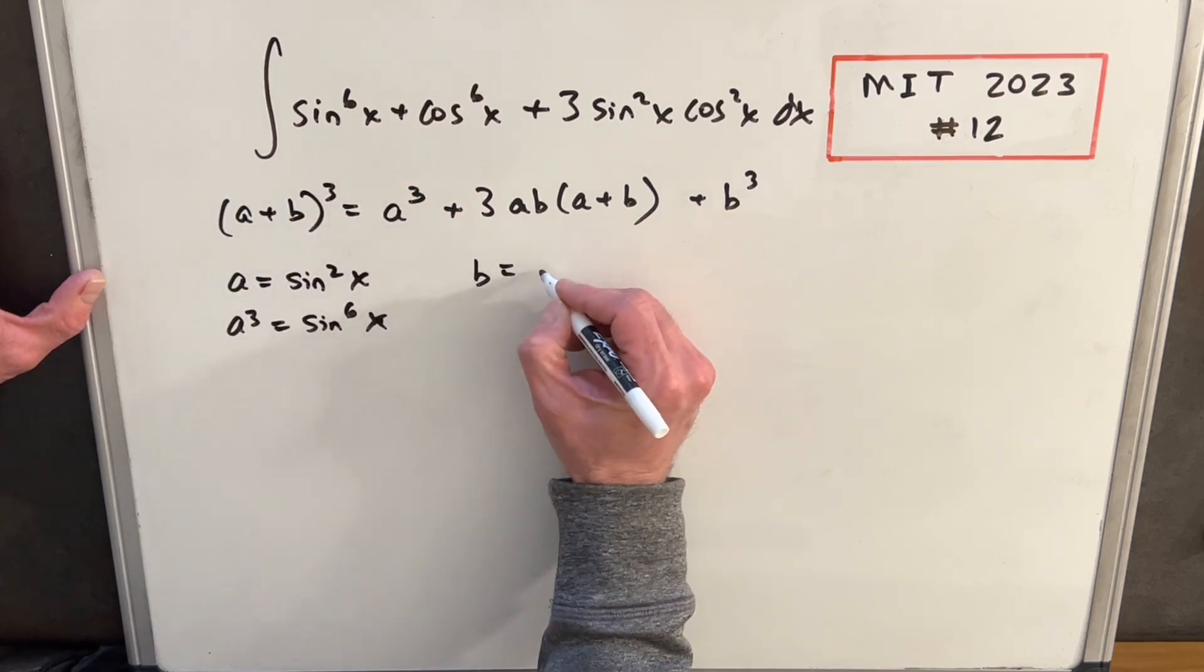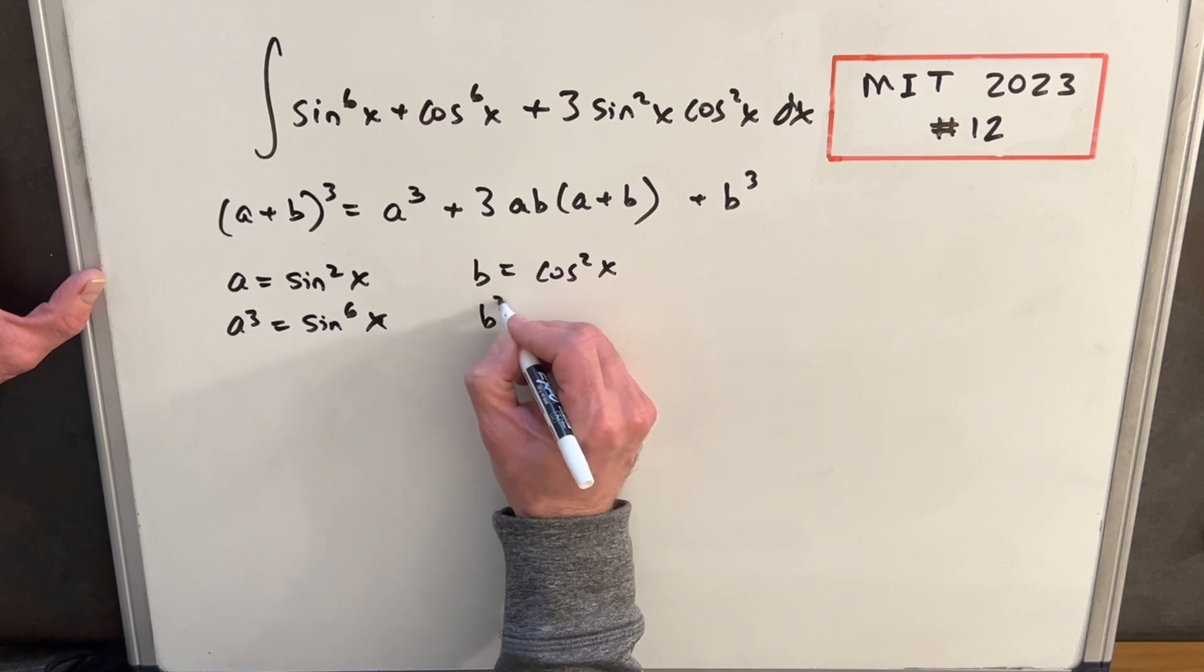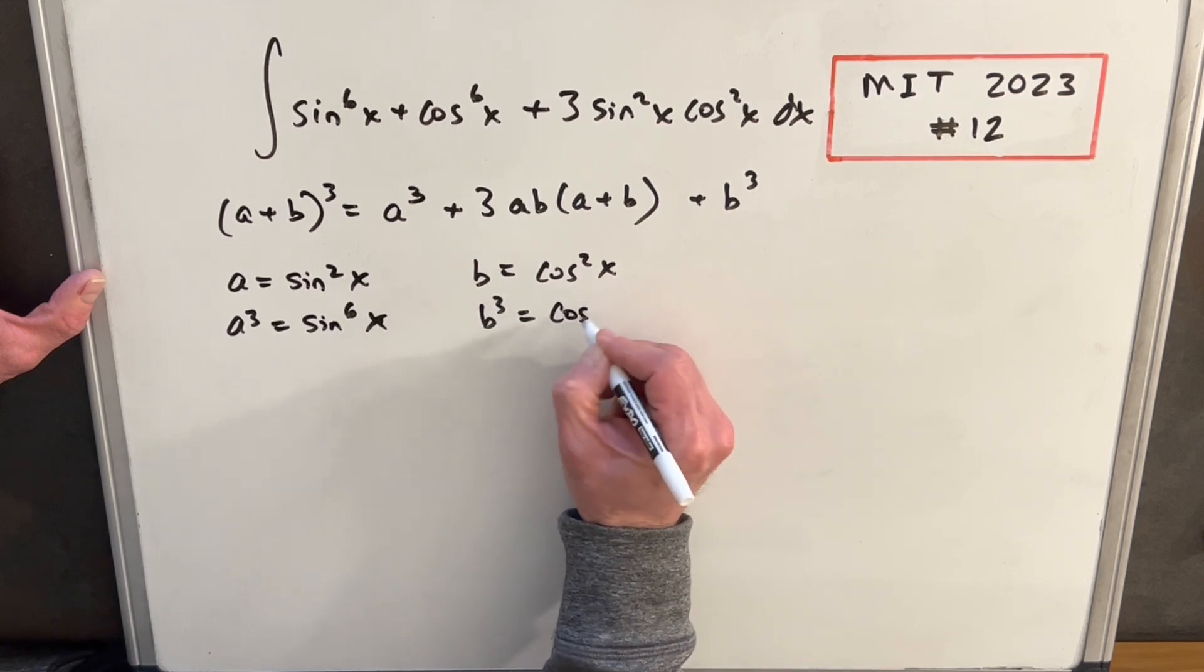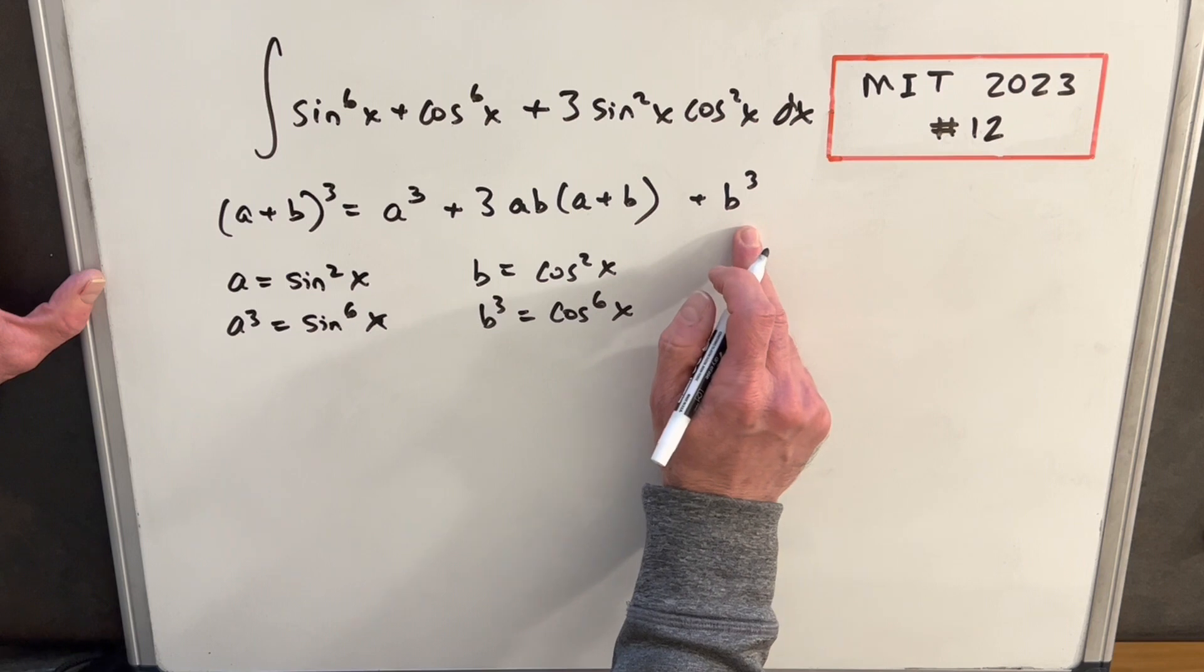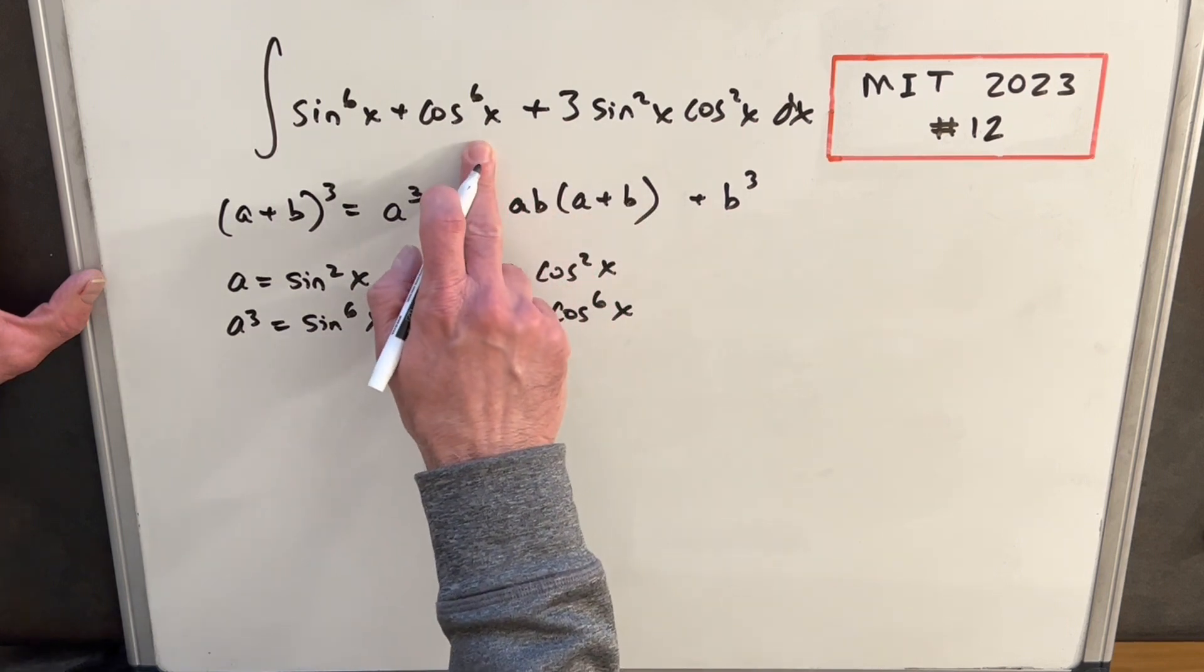Let's look at if b is cosine squared x. Then same exact thing, b cubed is going to be cosine to the 6x. So here we'll have cosine to the 6x. That matches this exactly.